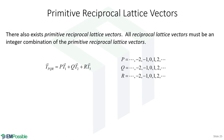In the reciprocal lattice, all the rules from the direct lattice apply. We can talk about primitive reciprocal lattice vectors and general non-primitive reciprocal lattice vectors. To be a valid non-primitive reciprocal lattice vector, it must be an integer combination of the primitive reciprocal lattice vectors. We use uppercase letters for reciprocal space quantities and lowercase for the direct lattice, and the integers in reciprocal space are also written in uppercase.